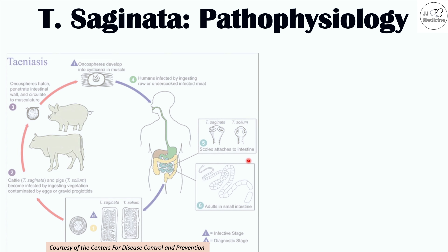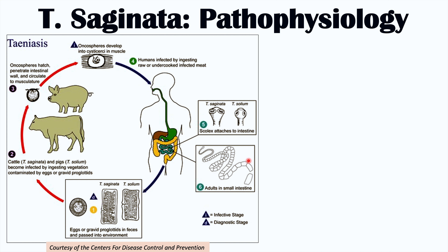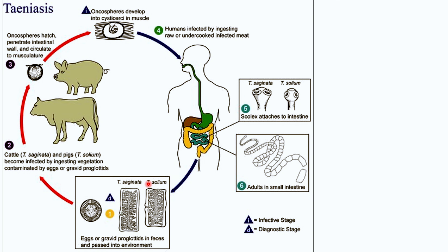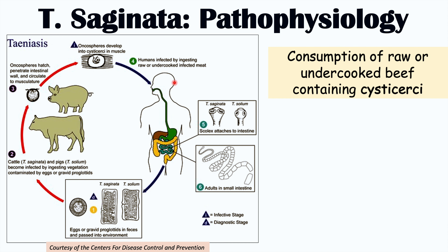Now let's talk about how this particular tapeworm infects humans. Because this is the beef tapeworm, it comes from cattle or cows. Cows become infected through ingestion of contaminated vegetation containing eggs or proglottids — little packets of eggs in the environment. The eggs then become known as oncospheres, hatch, penetrate intestinal walls inside the cow, circulate throughout the cow's body, and enter into the musculature. Once the oncospheres get to muscle, they develop into cysticercae, the infective stage of this particular tapeworm.